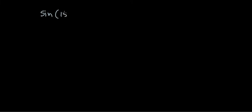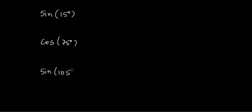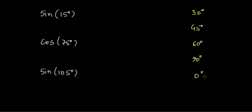Let's say we wanted to find sine of 15 degrees, cos of 75 degrees, or sine of 105 degrees. We usually know the trigonometric ratios for the standard angles: 30 degrees, 45 degrees, 60 degrees, 90 degrees, and of course zero degrees. But how do we find these?